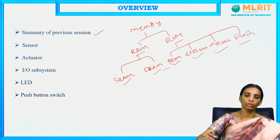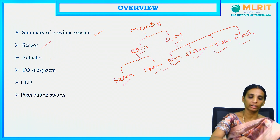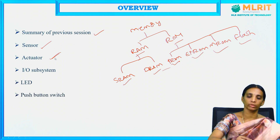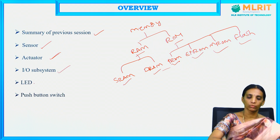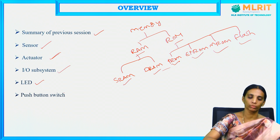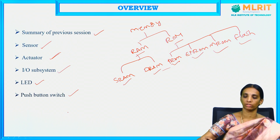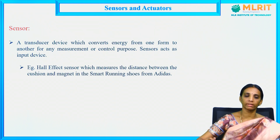Now we are going to discuss about sensors and actuators — what is meant by a sensor, what is meant by an actuator, what are examples for these sensors and actuators, and what is meant by an IO subsystem. In sensors and actuators, we are going to discuss about two devices: LED and push-button switch in this video session. The remaining devices will be discussed in the next session.